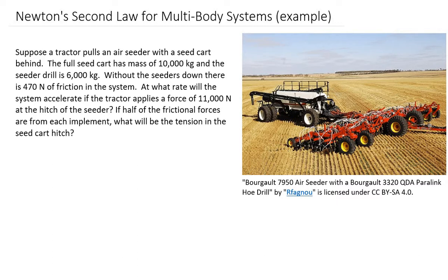Without the seeders down, there's 470 newtons of friction in the system — just from wheel bearings and whatever friction the wheels encounter when being pulled. We have two questions: first, at what rate will the system accelerate if the tractor applies a force of 11,000 newtons at the hitch of the seeder? Second, if half of the frictional forces are from each implement, what will be the tension in the seed cart hitch?